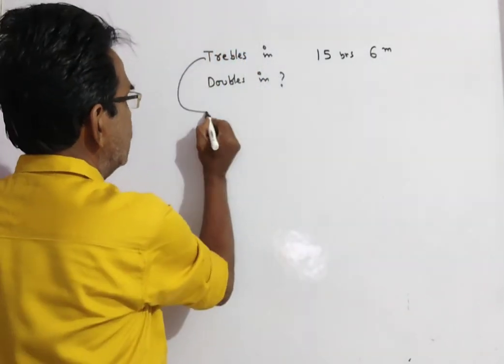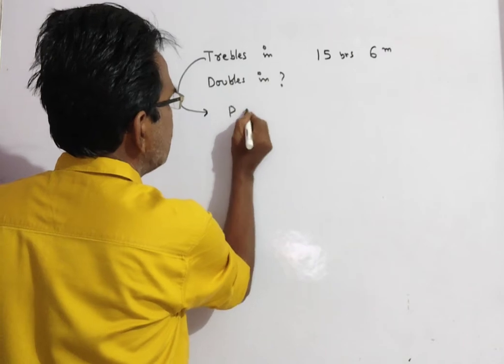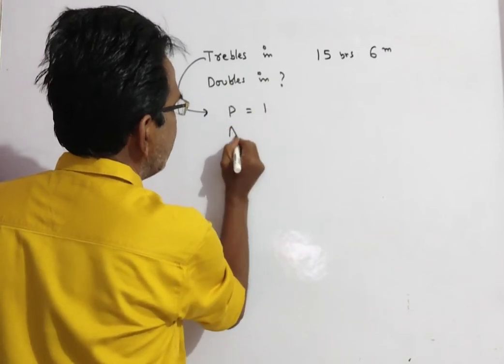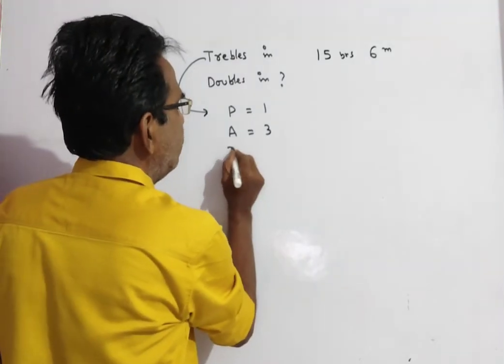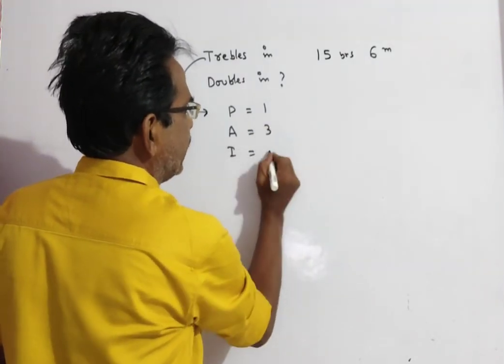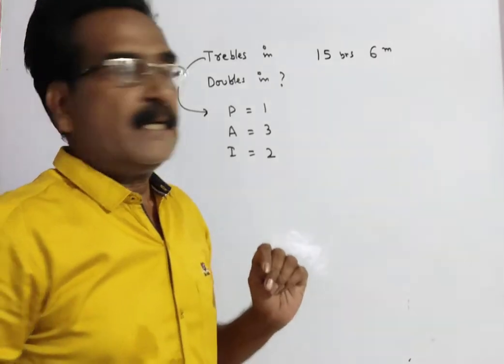Triples means we know if P is equal to 1, A is equal to 3. 1 becomes 3, then it is tripled. In the process, we get interest 3 minus 1, which is 2.